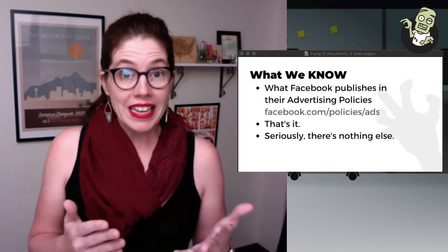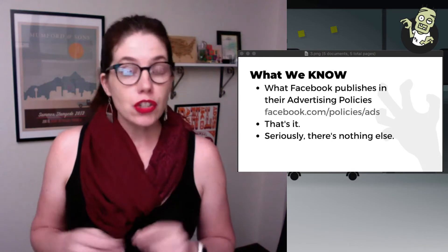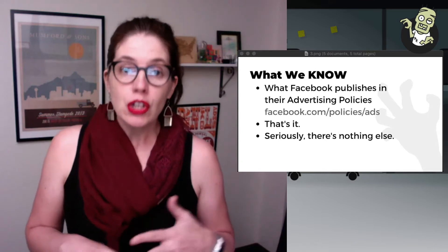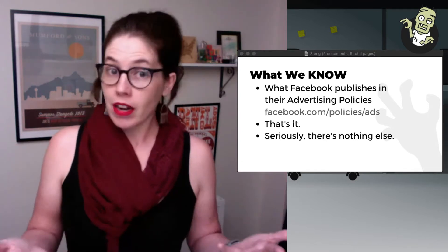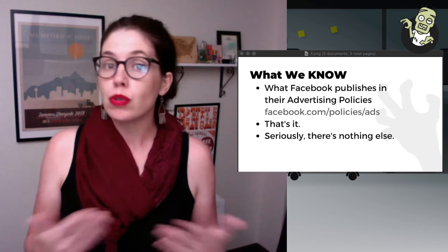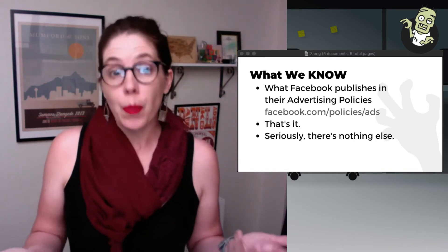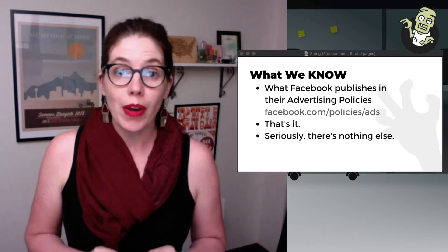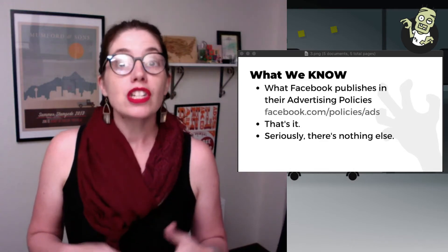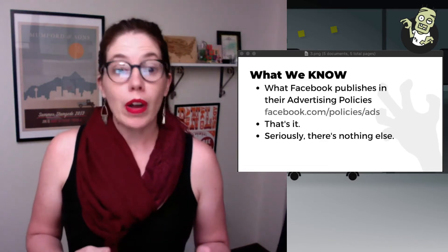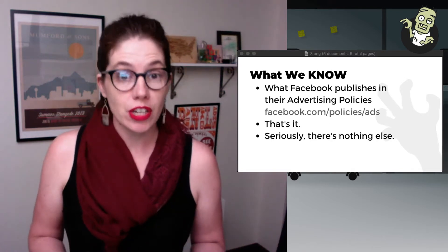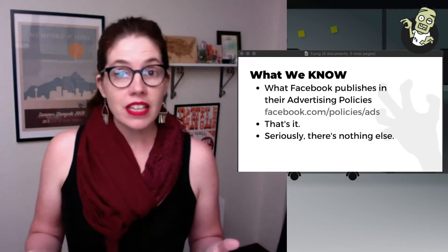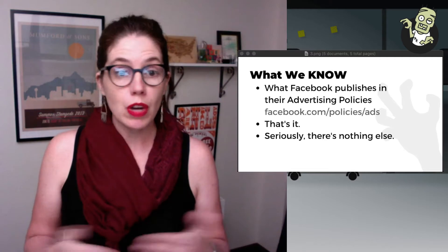What we know is what Facebook tells us. They are the judge, jury, and executioner when it comes to what gets approved, what gets denied, what happens to ad accounts — and they are also the newspaper publisher. Facebook is not a democracy; it's a platform. You choose to participate in it and those are just the rules. So if you're advertising on Facebook, no matter what your product or service is, you should get to know their advertising policies. Just go to facebook.com/policies/ads — everything that we know is on that page. We know what you know.